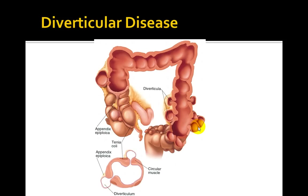Diverticulosis is the most common cause of acute lower GI bleeding in people over 40 years of age. Diverticulitis is due to the inflammation and potential perforation of a diverticulum, secondary to possibly a fecal impaction. Here's a diagram showing the diverticula as they're outpouching in different areas.